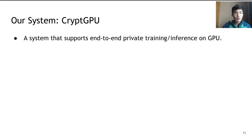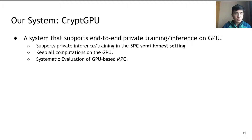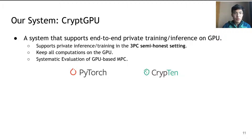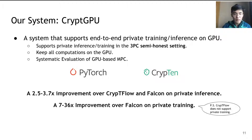We present our system, CryptGPU, which supports end-to-end private training and inference on the GPU in a three-party semi-honest setting, keeping all computations on the GPU. We performed a systematic evaluation of GPU-based multi-party computation and observed that both linear and nonlinear operations benefit from GPU acceleration. Built on top of PyTorch and CrypTen, our system shows a 2.5 to 3.7x improvement over CryptFlow and Falcon on private inference, and a 7 to 36x improvement over Falcon on private training.